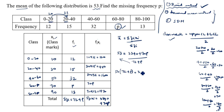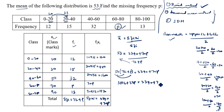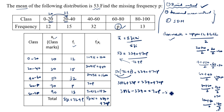Cross-multiplying: 53 × (72 + p) = 3340 + 70p. Expanding: 3816 + 53p = 3340 + 70p. Rearranging — bring numbers to one side and p terms to the other: 3816 − 3340 = 70p − 53p.